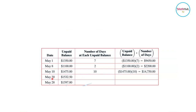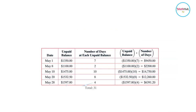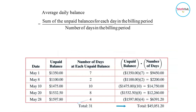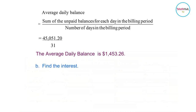$1,475 × 10 = $14,750. From May 20 to May 28 the unpaid balance is $1,532.50, running for 8 days. From May 28 to May 31 including the 31st is 4 days. All days sum to 31, the total number of days in the billing period. Adding up all the balance-times-days products gives $45,051.20. Dividing by 31 days gives an average daily balance of approximately $1,453.26.